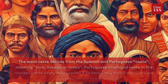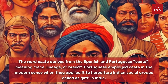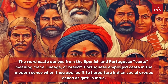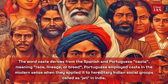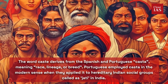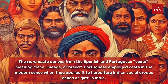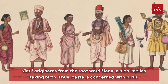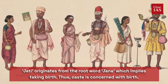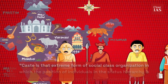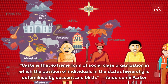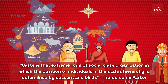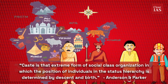The word caste derives from the Spanish and Portuguese 'casta', meaning race, lineage, or breed. Portuguese employed 'casta' in the modern sense when they applied it to hereditary Indian social groups called jati in India. Jati originates from the root word 'jana', which implies taking birth. Thus, caste is concerned with birth. According to Anderson and Parker, caste is that extreme form of social class organization in which the position of individuals in the status hierarchy is determined by descent and birth.